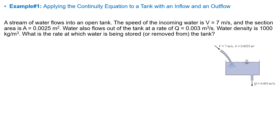In this example, I'm going to apply the continuity equation to a tank that has an inflow and an outflow. The problem statement tells us that we have a stream of water that flows into the tank, and also we have another stream that drains the tank. A velocity and area of inflow has been given to us, and also the volumetric flow rate of outflow has been given to us as well. What we are going to find is the rate at which water is being stored or removed by the tank.